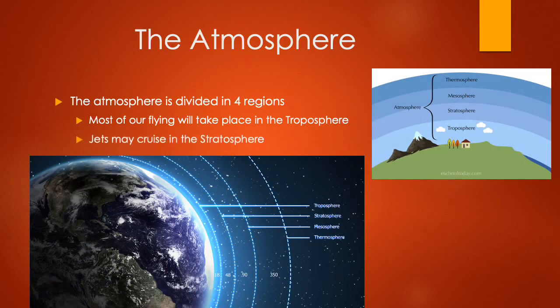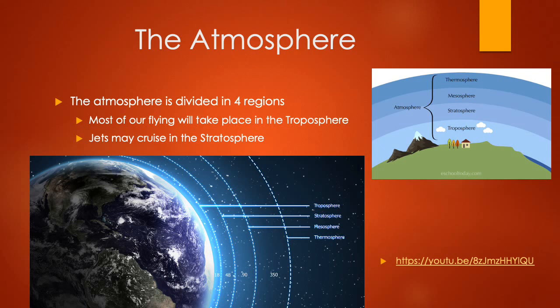So the first topic we're going to look at is the atmosphere. The atmosphere is divided into four separate regions. We have the thermosphere, the mesosphere, the stratosphere, and the troposphere. The troposphere is where all of our flying will happen and it's where the airliners will be flying as well.